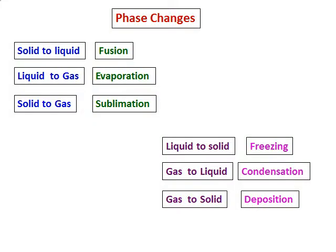Before we understand phase changes, let's understand the names of each transition. When a solid becomes a liquid, we call it fusion. When a liquid becomes a gas, we call it evaporation. And when a solid becomes a gas, we call it sublimation.